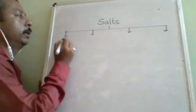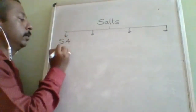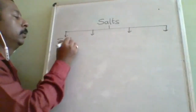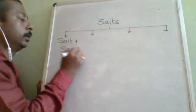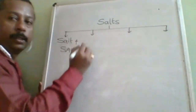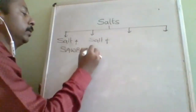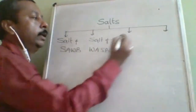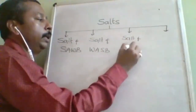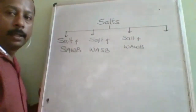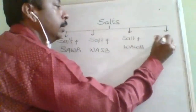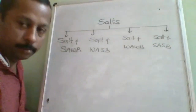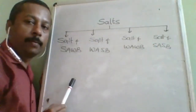The four types of salts are: first, salt of strong acid and weak base (SA+WB); second, salt of weak acid and strong base (WA+SB); third, salt of weak acid and weak base (WA+WB); and fourth, salt of strong acid and strong base (SA+SB). This classification is based upon what the salt is made up of.